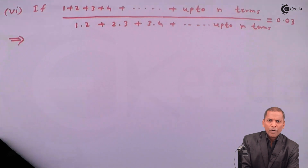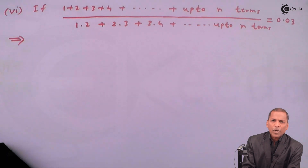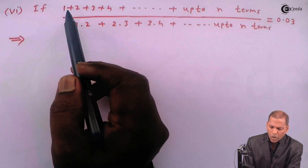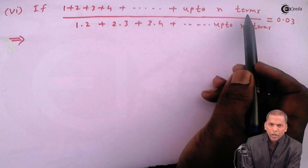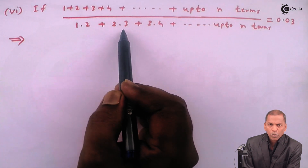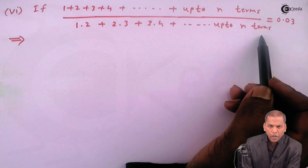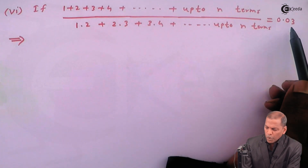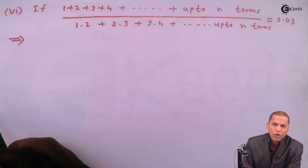Hello friend. Now we see problem one, sub-question six, which is based on theorem one, theorem two, theorem three of chapter Sequence and Series. The question is: if one plus two plus three plus four, going up to n terms, totally divided by one into two plus two into three plus three into four, going up to n terms, is equal to 0.03, then we have to find the value of n.